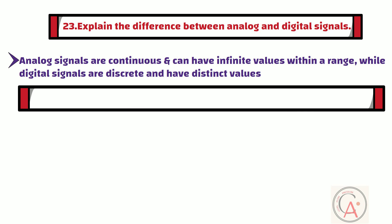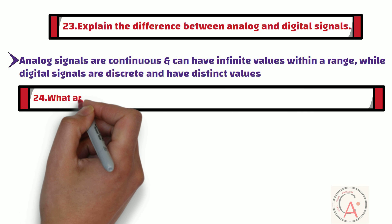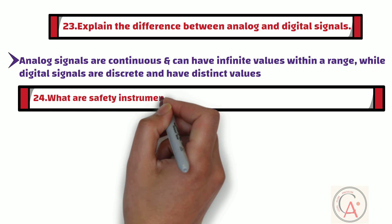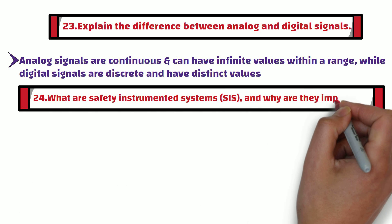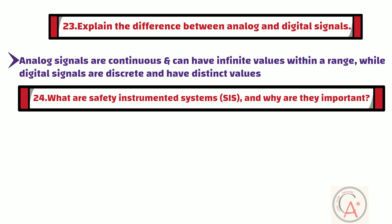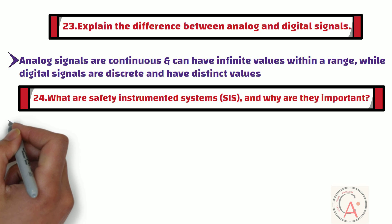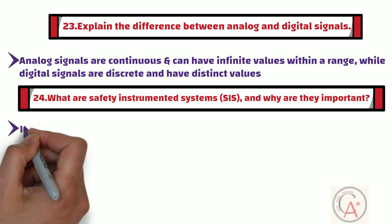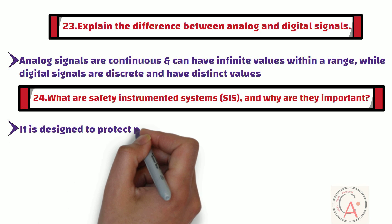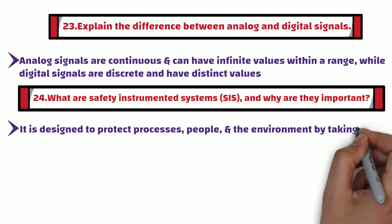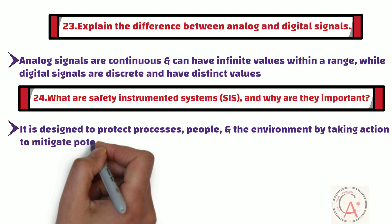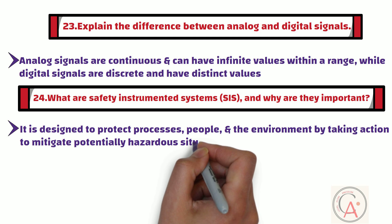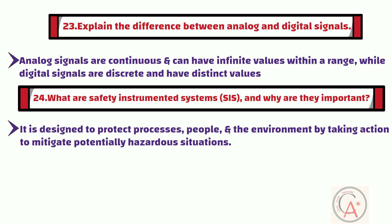The 24th question is: what are safety-instrumented systems, or SIS, and why are they important? SIS are designed to protect processes, people, and the environment by taking action to mitigate potentially hazardous situations. They are crucial for safety in industrial operations.